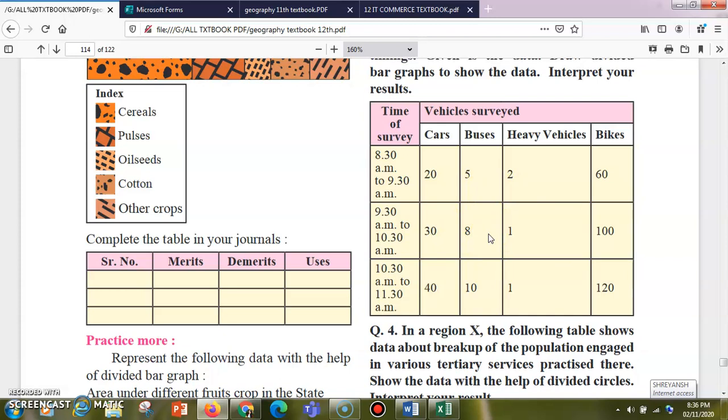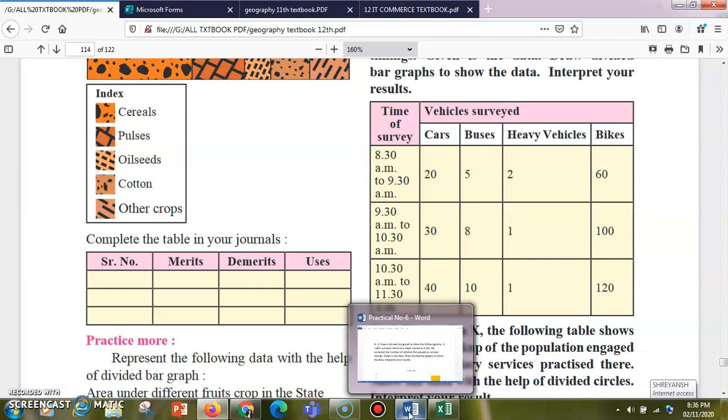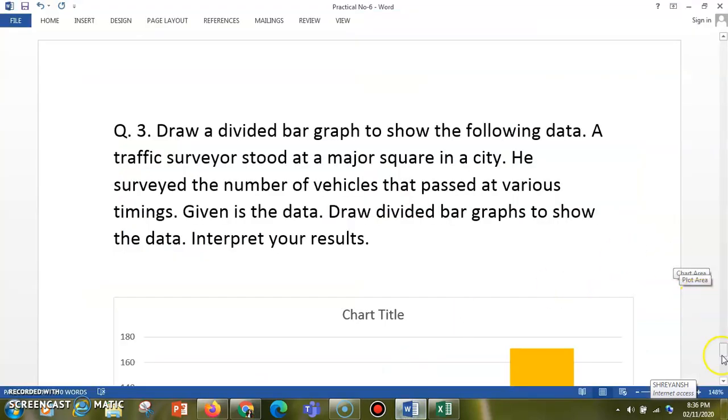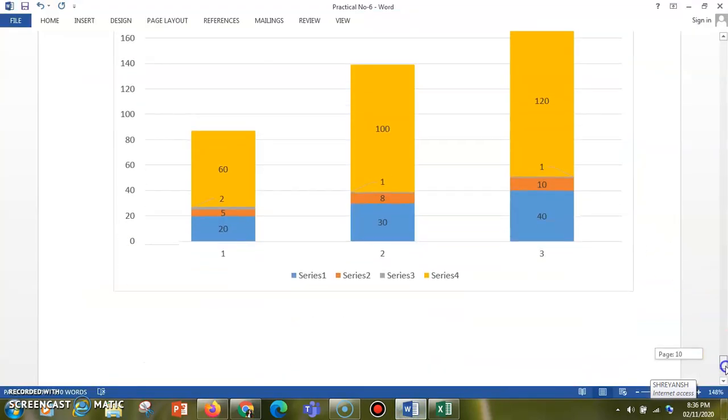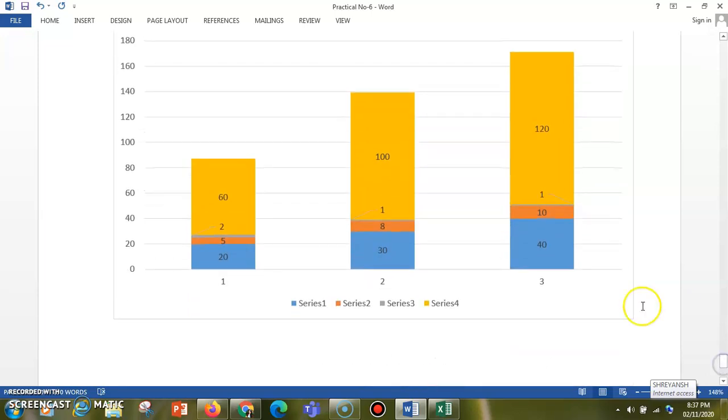Now here the question is you have to make a divided bar graph. So how to construct it? This is how it will appear. You can see that the slots, the timing slots, that is your first slot was from 8:30 to 9:30. This is how the different modes of transportation are highlighted with different colors. This is the second time slot from 9:30 to 10:30, this is the third time slot, and according to that the bar graph is being divided into three pieces.